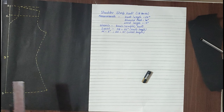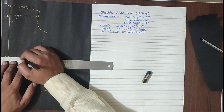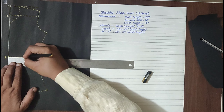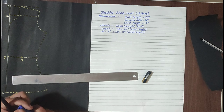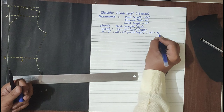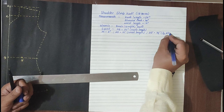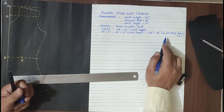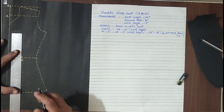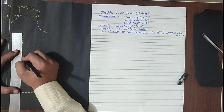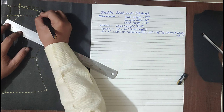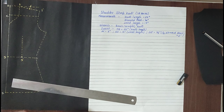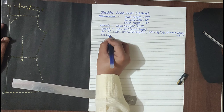Here we will again draw an imaginary line. On this imaginary line, we will mark a point D-dash where D to D-dash is equal to 3 and a half inches. This is the dart position, which is 1/12 of the all-round bust plus half an inch. This is the waist dart position, and we will draw an imaginary line from D-dash. We will mark both shoulder tips as E and E-dash, and take the midpoint of E E-dash as F.